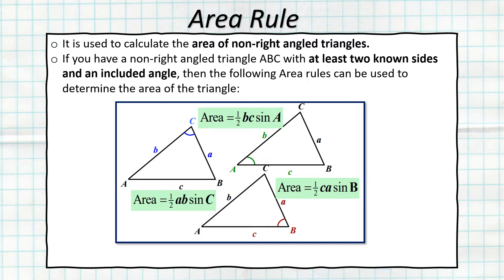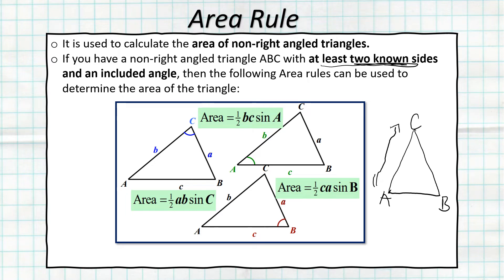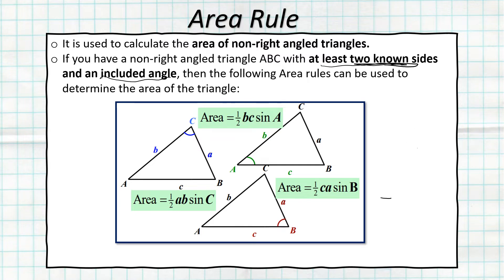When do we use the area rule? In a non-right-angle triangle ABC, you must have at least two known sides — for example, the length of AC and CB — and also an included angle. If you know those two sides and the included angle, the area rule can be used to determine the area of that triangle.